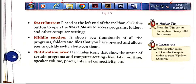The second component of the taskbar is the middle section, also known as the Quick Launch Bar, which is present on the right side of the Start button. The icons displayed on this bar help in quickly accessing programs and applications. For example, you can see Internet Explorer, Windows Explorer, Windows Media Player, Google Chrome, and many more options, which allow you to directly click on them to open these applications. The shortcut key for opening the Start button is the Windows key on the keyboard.